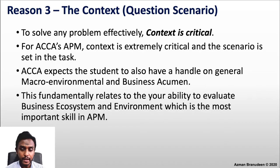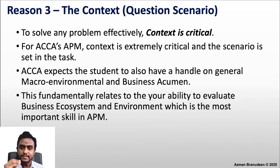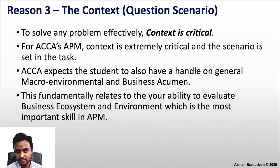This fundamentally relates to your ability to evaluate the business ecosystem and environment — the most important skill in APM. Chapter one, introduction to strategic management accounting, and chapter two, environmental influences, beautifully fit in with rational planning models. You analyze the macro environment, micro environment, industry, and internal company. Analysis is critical because only after you analyze the environment can you figure out your strategic options. You apply this skill to the given context — the story, the company, the industry in the question.